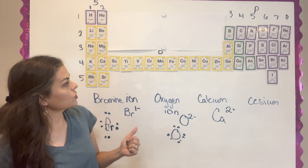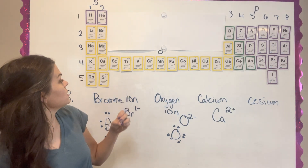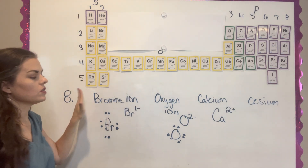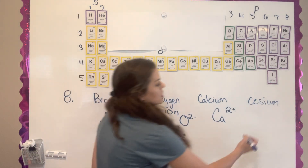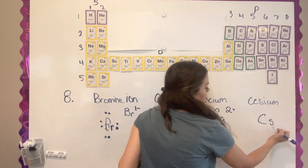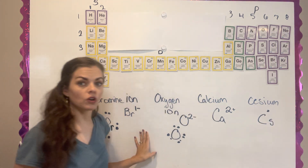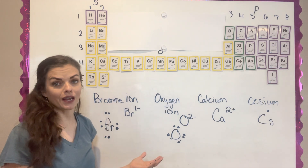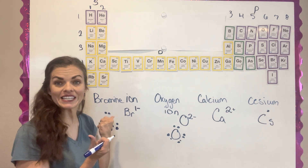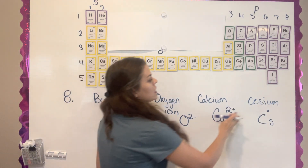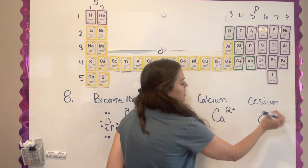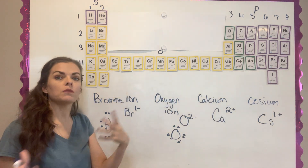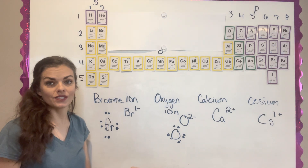The last one we're going to do is cesium. Cesium would go right down here and would have one electron. To turn it into an ion, it's going to give that electron away instead of taking seven. When it gives away an electron, it loses a negative charge, so it becomes a one positive charge.